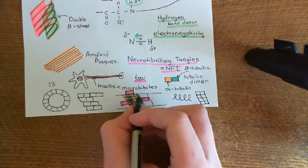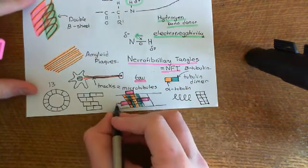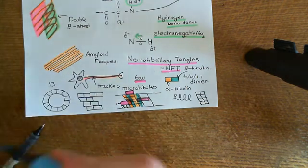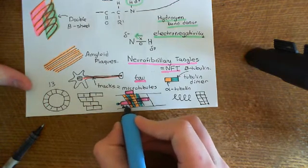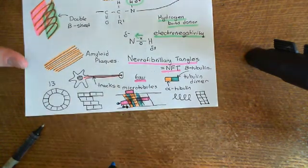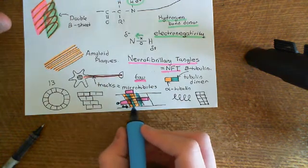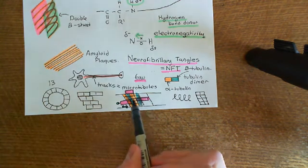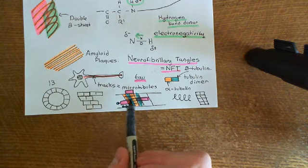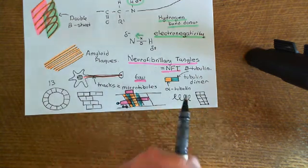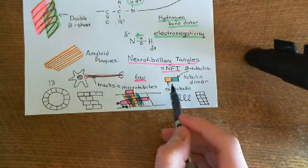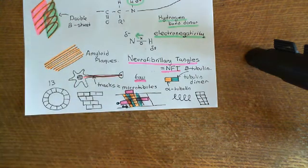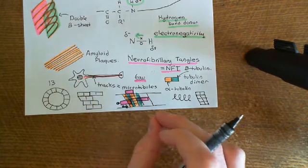The tau proteins get loads of phosphate groups added onto them. When the tau proteins get hyperphosphorylated in this way, they dissociate from the microtubule — they no longer bind to it. Once the tau proteins have all fallen off the microtubule, the microtubule then starts to disintegrate, breaking apart back into the separate tubulin dimers. You're going to lose your microtubules between the cell body and the axon terminal.